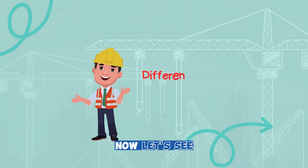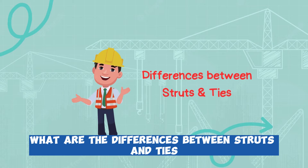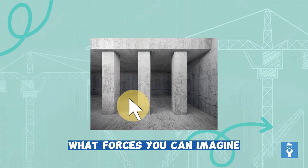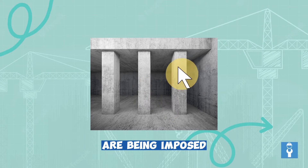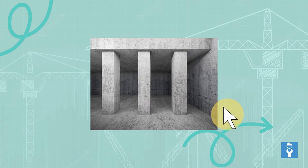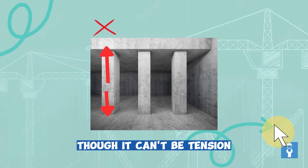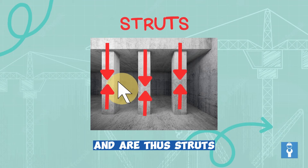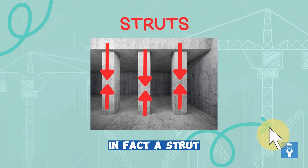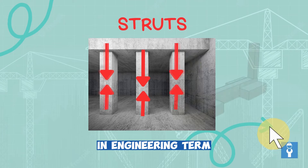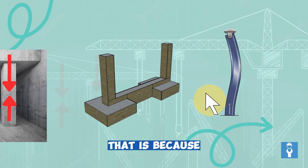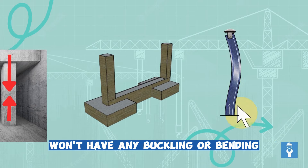Now let's look at the differences between struts and ties. If you think of a column, what forces are being imposed? Columns are meant to carry compressive force — they are struts. In fact, a strut in engineering terms is referred to as a short column — one that won't experience any buckling or bending.